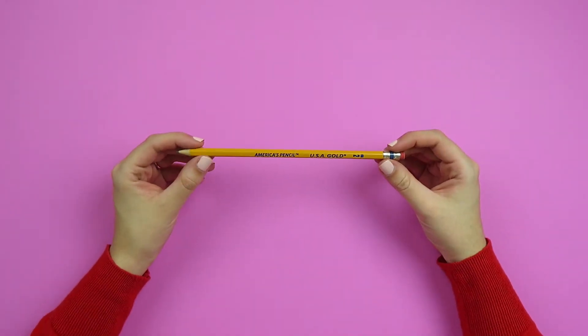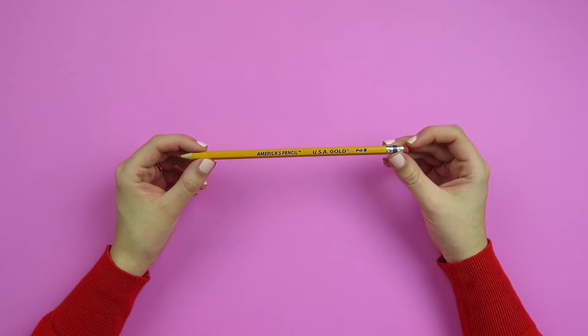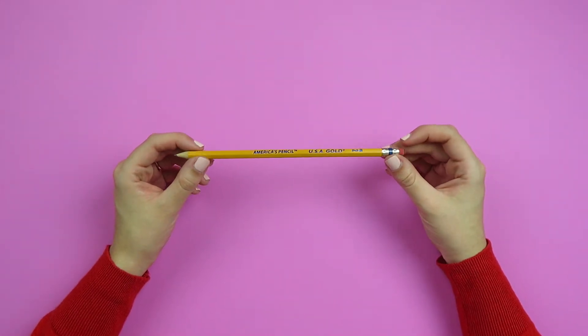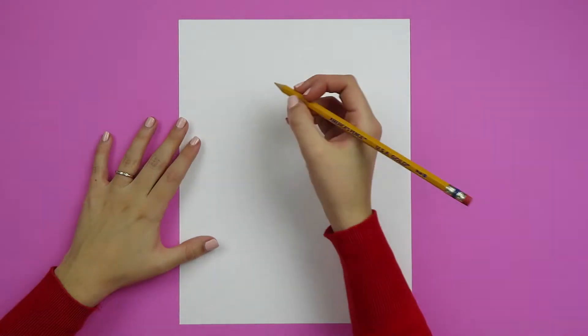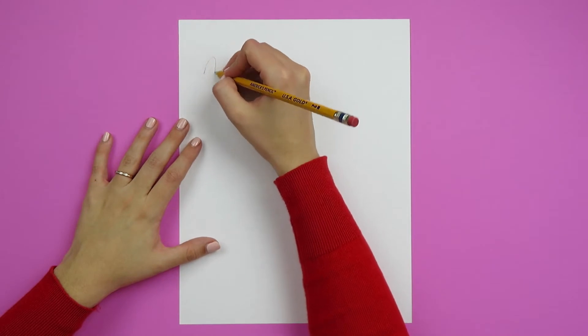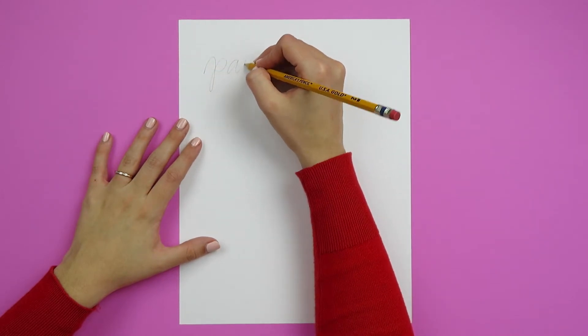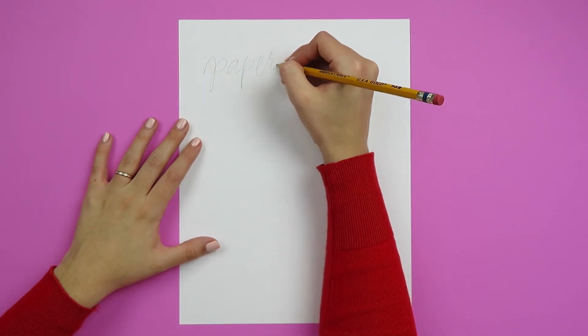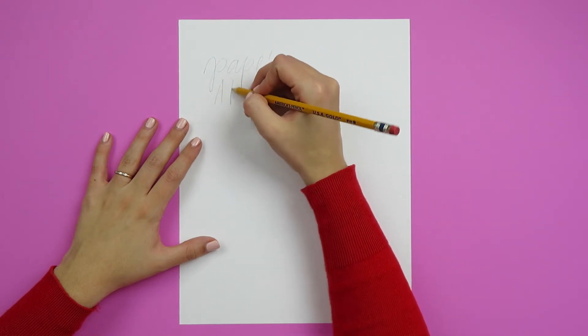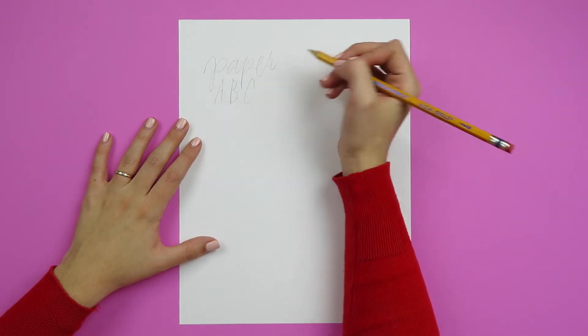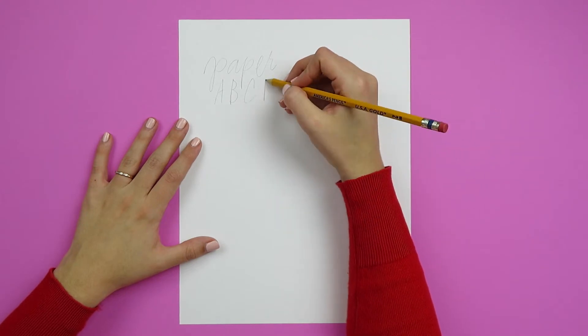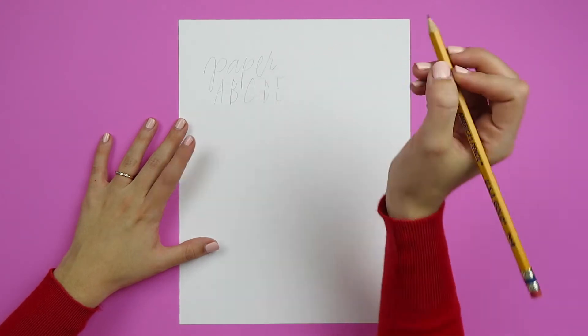For me, it always starts with a pencil sketch and I don't think you need to start with a fancy pencil. A number two pencil or whatever you have in your junk drawer will be just fine because you're going to be sketching a lot in those beginning stages of learning how to letter. So it's really important to have a bunch of pencils on hand and also not be scared of that sketching process and of having to start over.